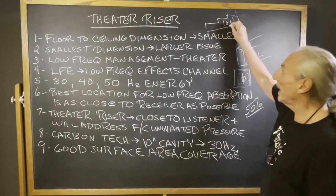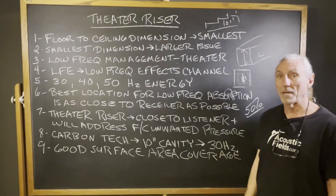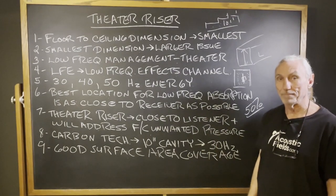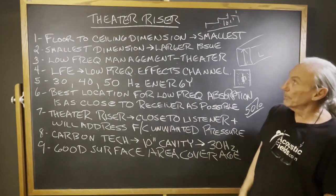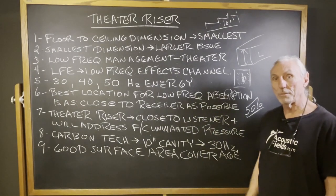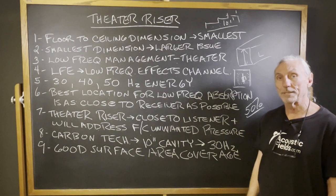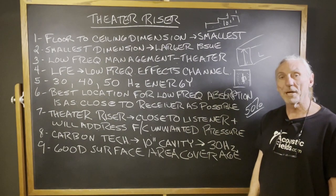Putting it in a riser underneath the seats is a great place to start. So the theater riser is a great place to put some low frequency management in our small home theaters. Hope this helps. Thank you.